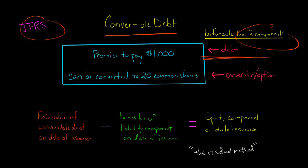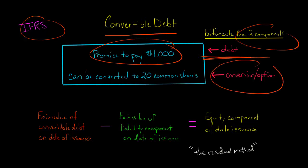You've got the debt itself — let's say there's a promise to pay $1,000 in five or ten years. And then you've got the conversion feature, the option to convert to common shares or preferred shares, something to convert to some other type of security. So you've got this convertible debt.